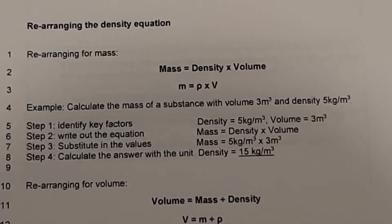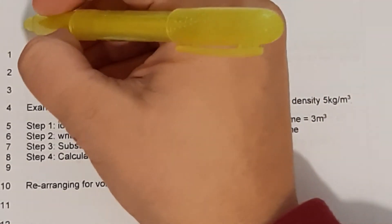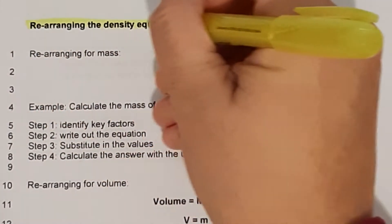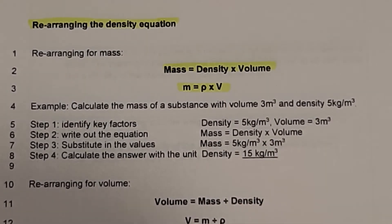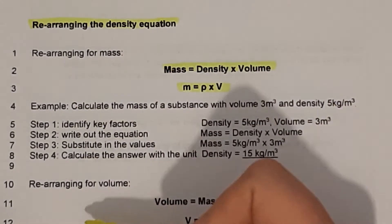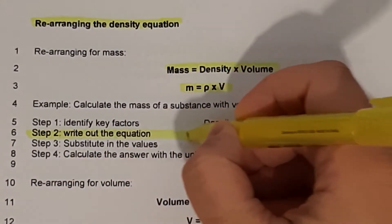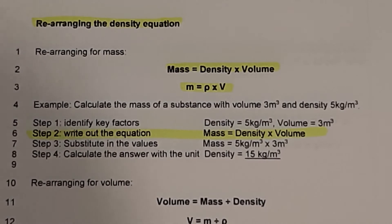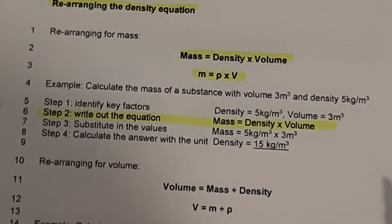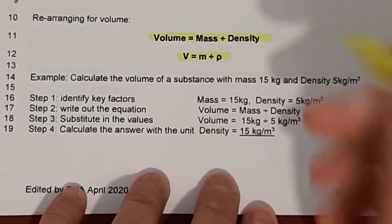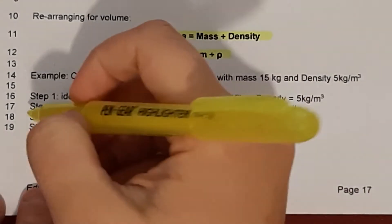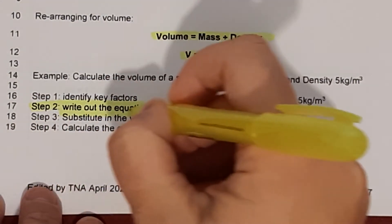Moving on to rearranging the density equation. You can rearrange it for mass: mass equals density multiplied by volume. When you write your step work, write out the equation in the form you need to use it. When rearranging for volume: volume equals mass divided by density. Write it out in the form you'll be using it.